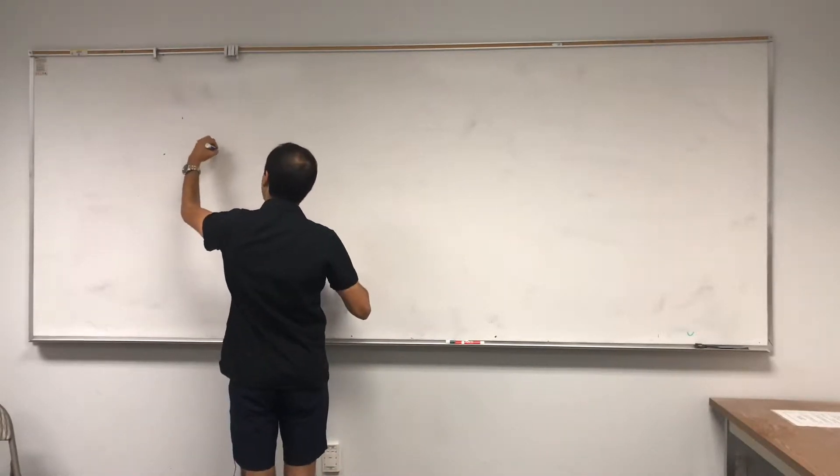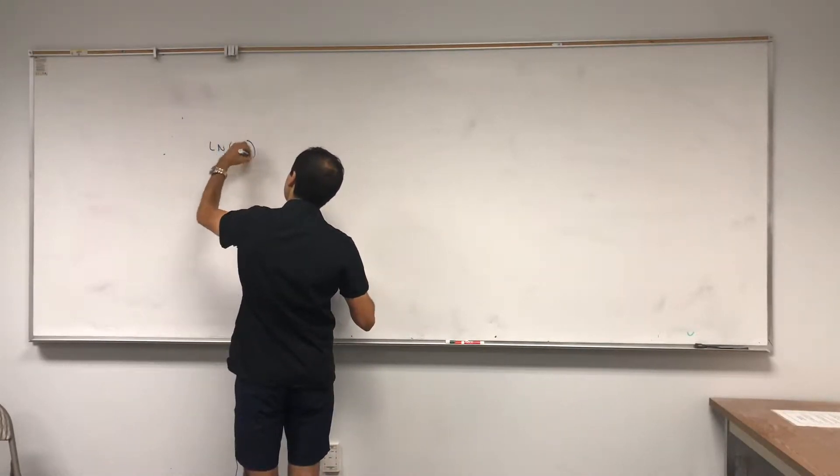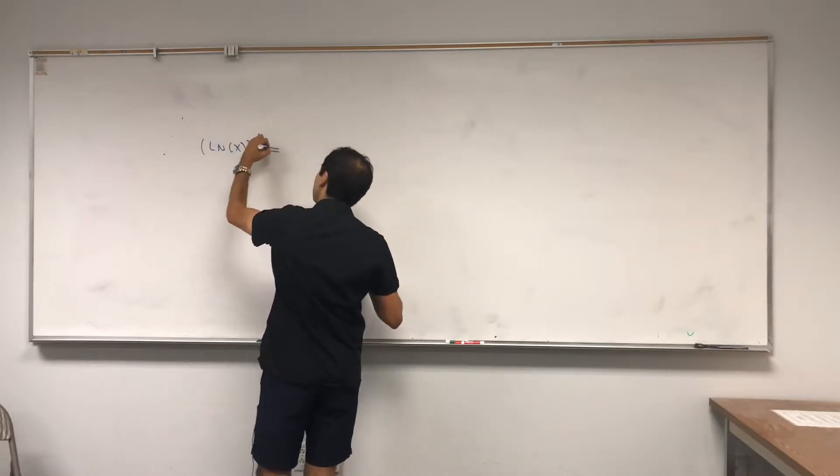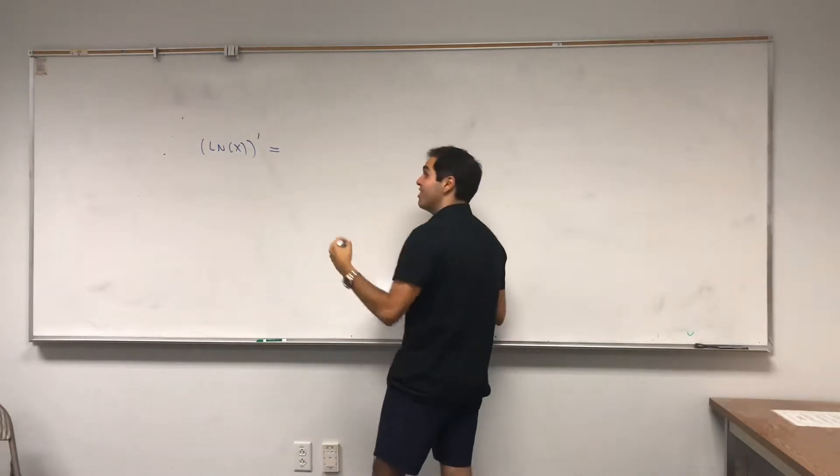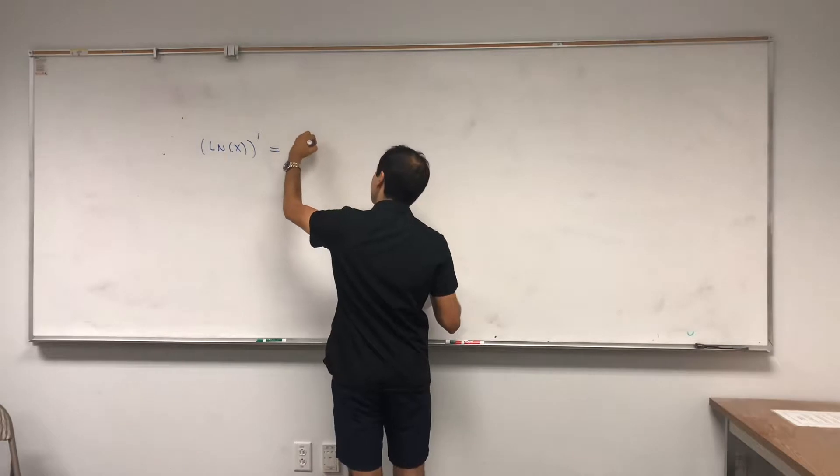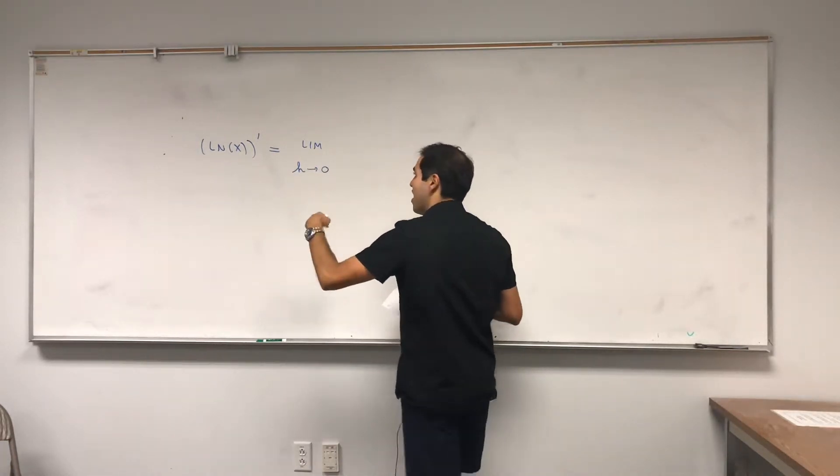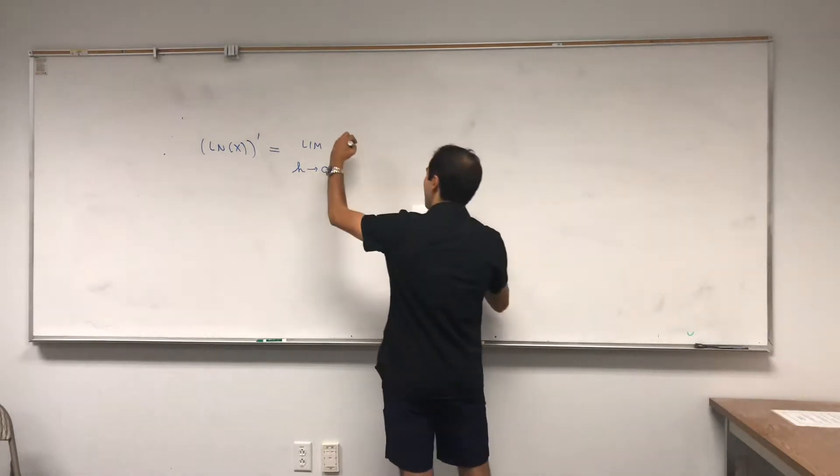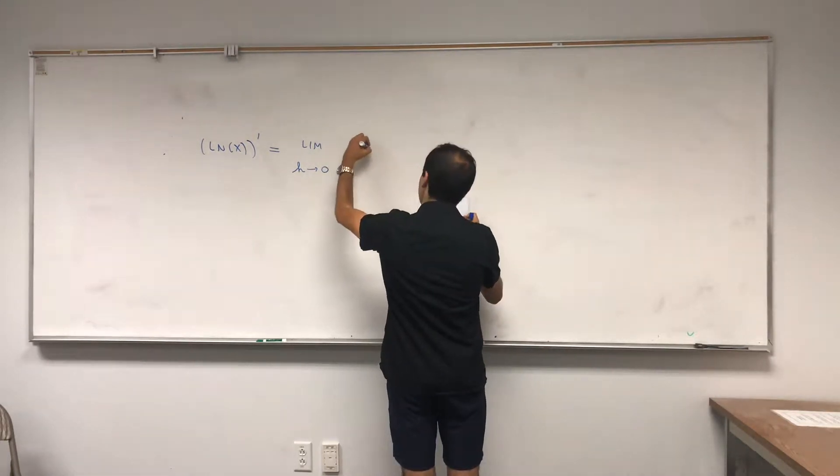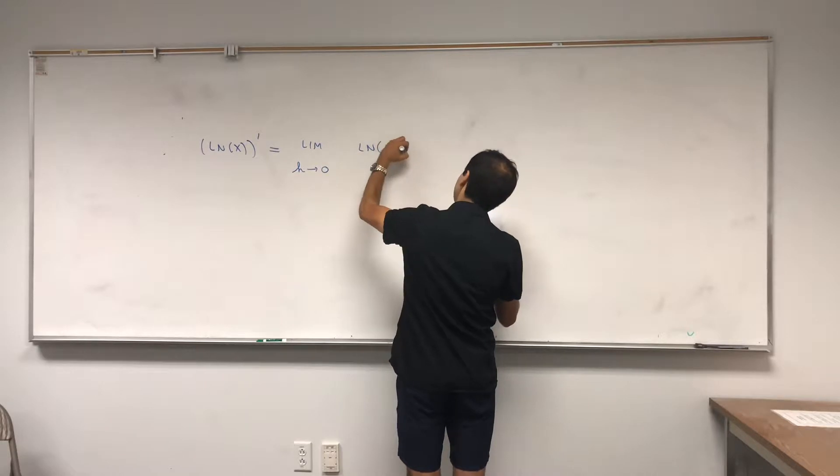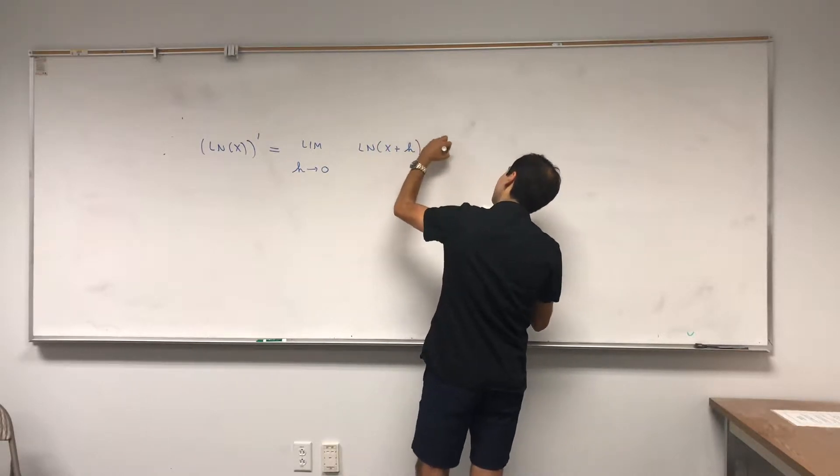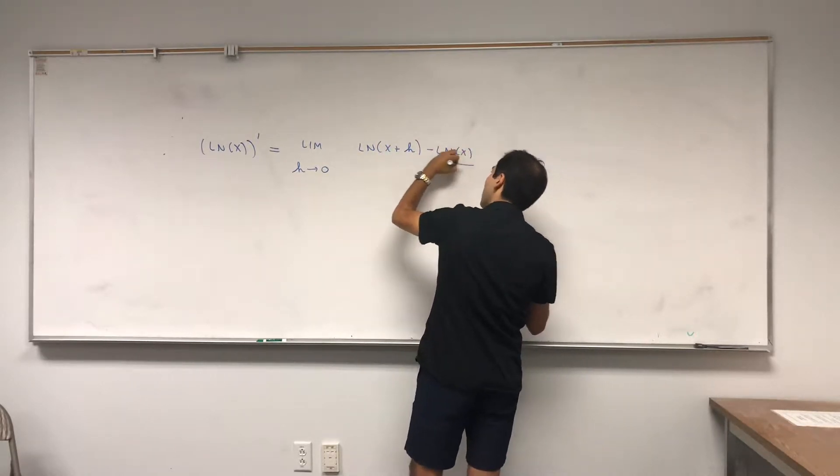Well, what's the derivative of ln of x? By definition, the definition of the derivative is limit h goes to 0 of f of x plus h minus f of x over h, so it becomes ln of x plus h minus ln of x over h.